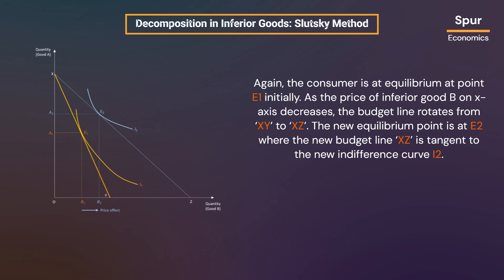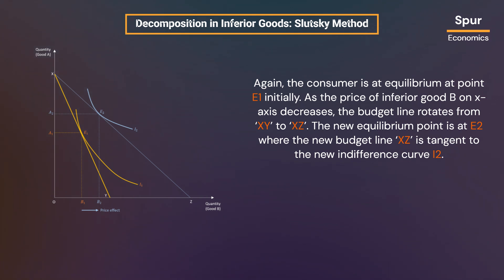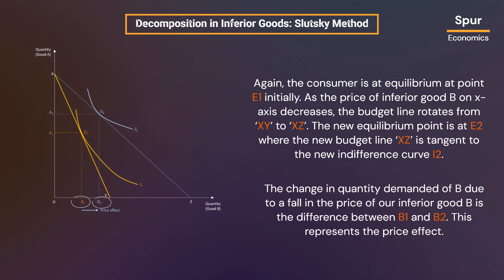Now, let us illustrate the Slutsky method of decomposing the price effect. Again, the consumer is at equilibrium at point E1 initially. As the price of inferior good B on the x-axis decreases, the budget line rotates from XY to XC. The new equilibrium point is at E2 where the new budget line XC is tangent to the new indifference curve I2. The change in quantity demanded of B due to the fall in price is the difference between B1 and B2, representing the price effect.